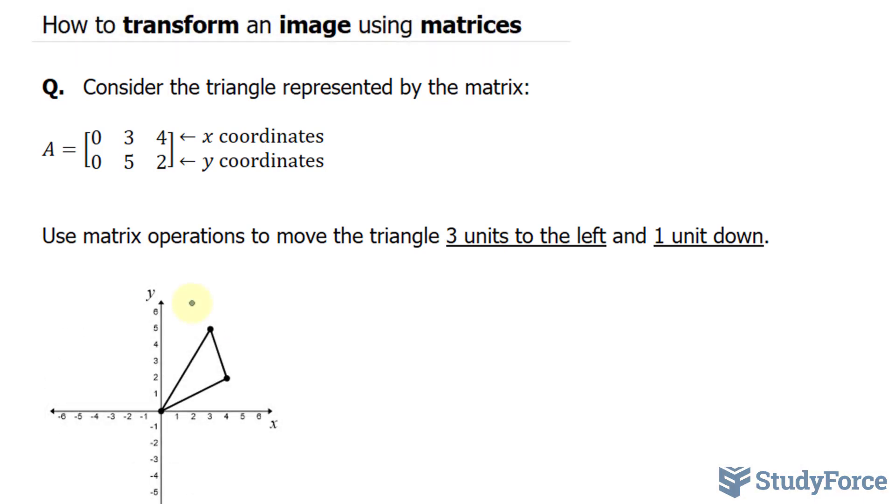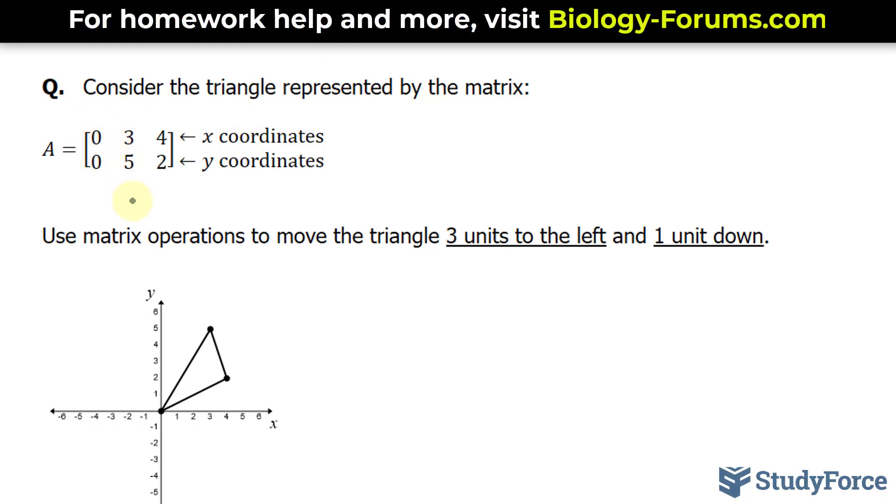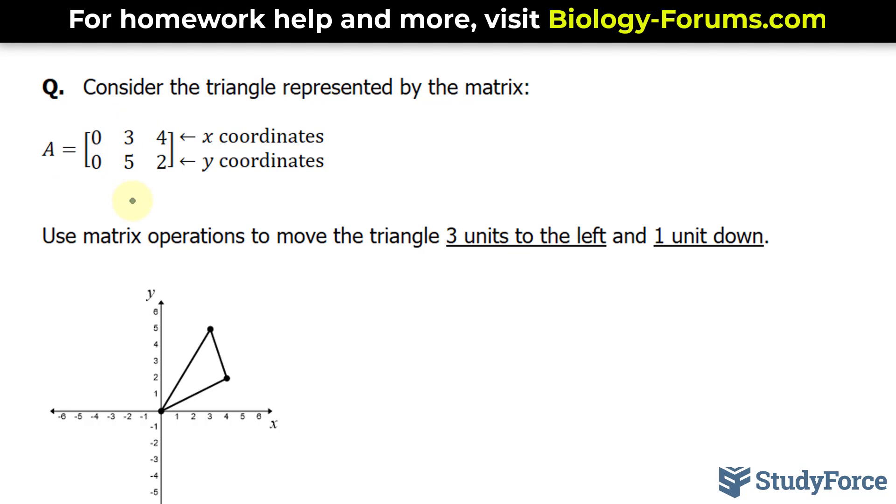Take a look at the triangle, and the points making up this triangle are set up in a matrix, and that matrix is called A, where the first row is all the x-coordinates, and the second row corresponds to all the y-coordinates. So we have a point at 0 and 0, 3 and 5, 4 and 2.